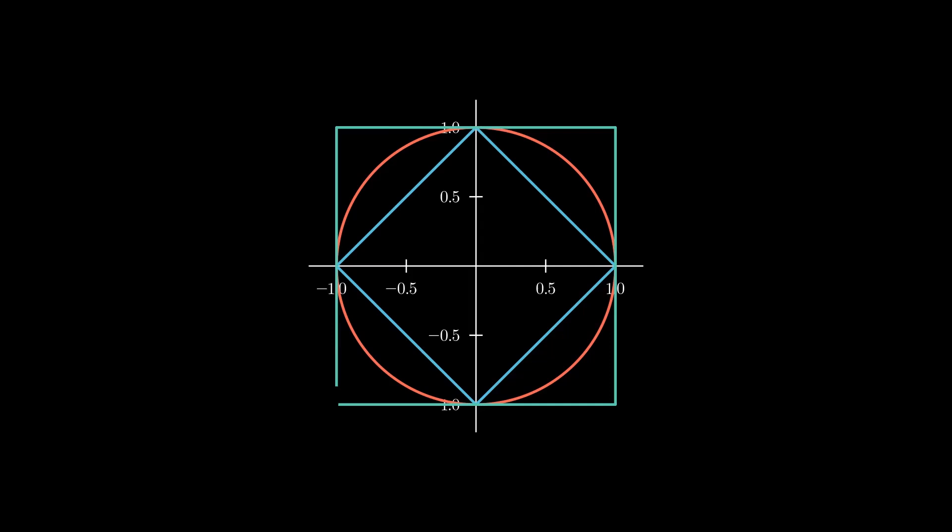Now one might wonder whether there are any other norms for the Euclidean vector spaces. It turns out that all the norms we have discussed so far are part of a larger class of norms, called p-norms. They are kind of in between the taxicab norm and the maximum norm. We define the p-norm of a vector to be the sum of the absolute values of the components raised to the p-th power, and then take the p-th root. This forms a norm for p in between 1 and infinity.